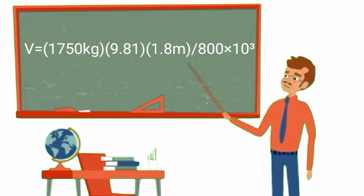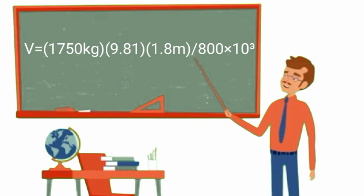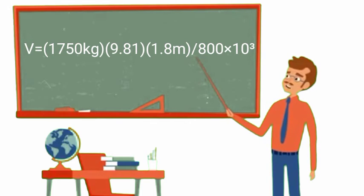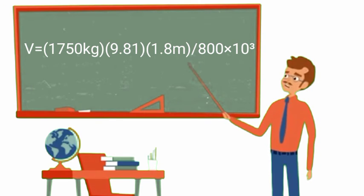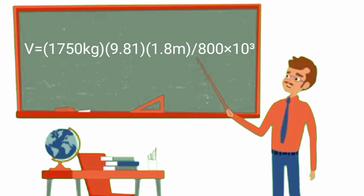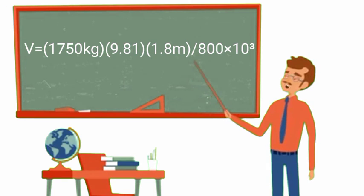Then substitute our values. So volume equals the mass of 1,750 times the constant of 9.81 for gravity times 1.8 meter divided by 800 times 10 raised to 3. Then simplify: 1,750 times 9.81 times 1.8 divided by 800 times 10 raised to 3. We have the volume of 0.038 cubic meters. So this is now the value of our volume.